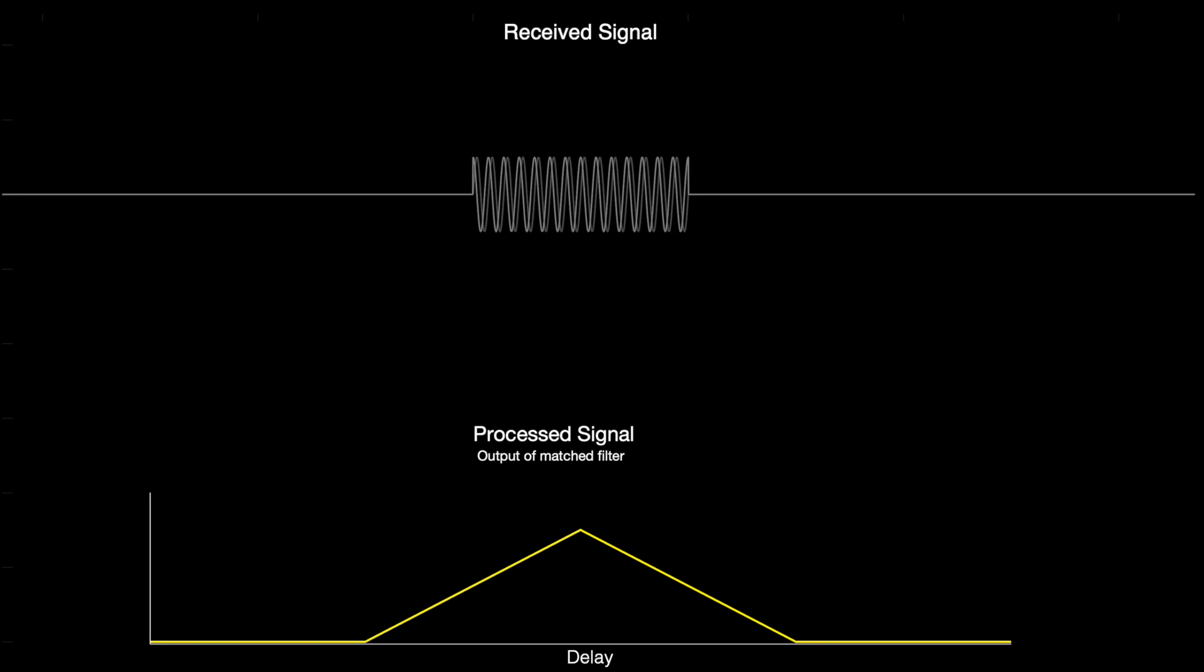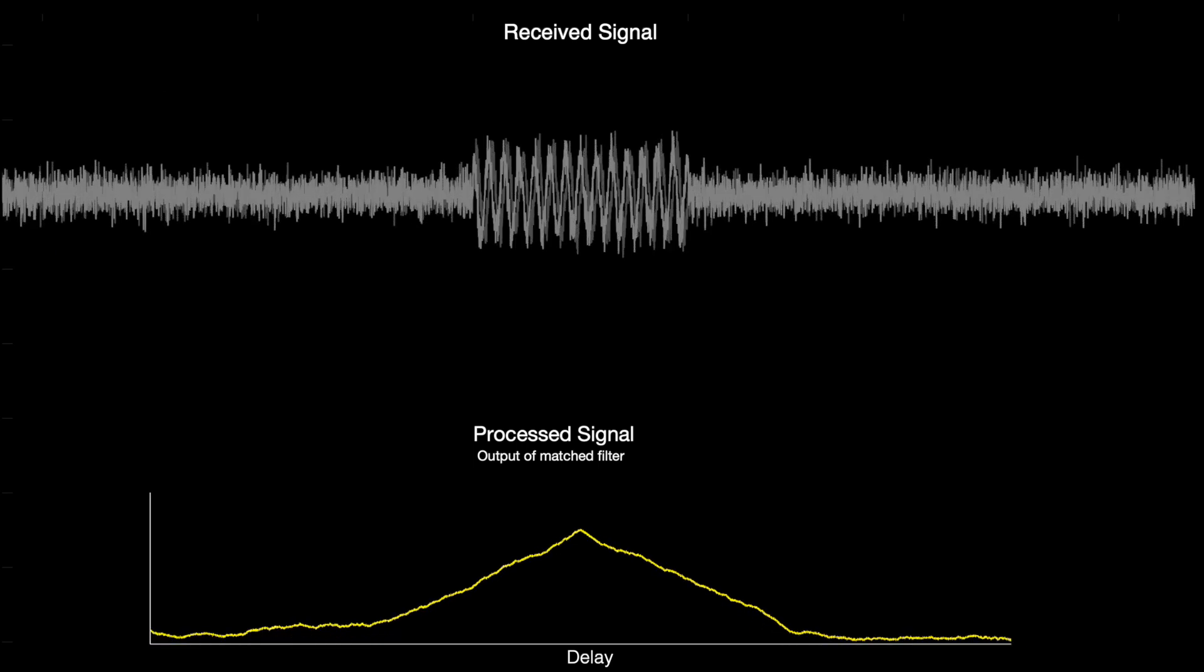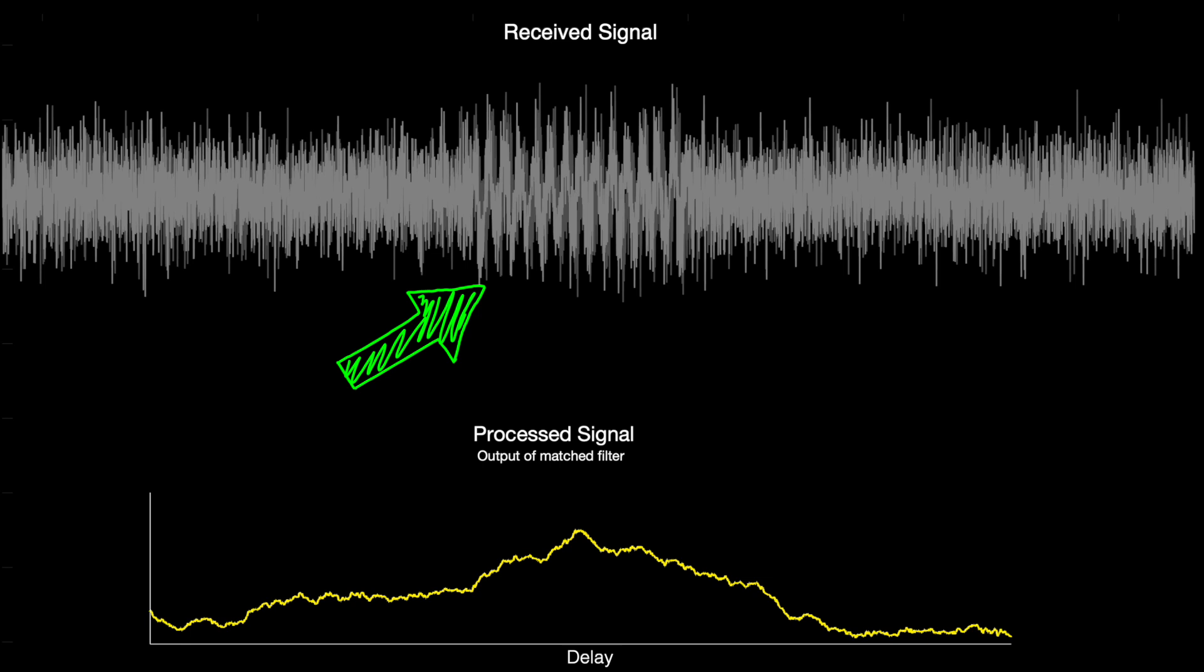I mean, watch what happens when I add a little random additive noise to a received signal. Notice how quickly the pulse becomes pretty much unrecognizable, and finding the start of the pulse energy would be pretty difficult. But with the process signal, it still has a nice peak right where the middle of the pulse is.